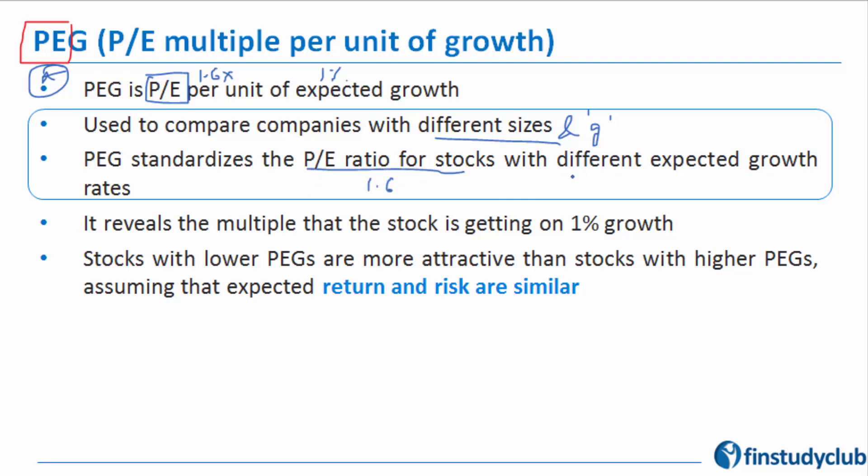The PEG standardizes the P/E ratio for stocks—let's say 1.6—with different expected rates. It reveals the multiple that the stock is getting on 1% growth.